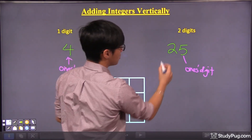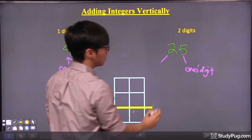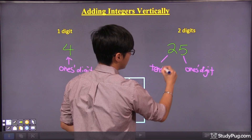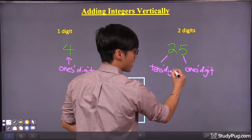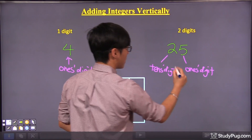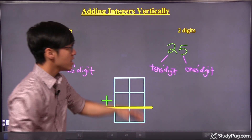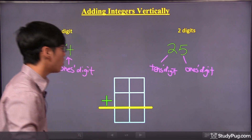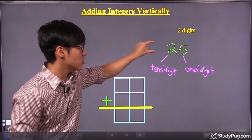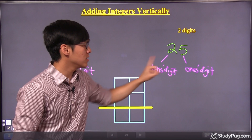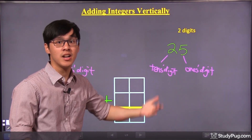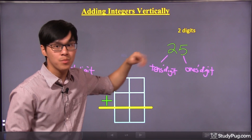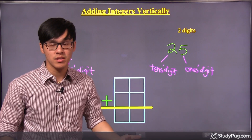And the digit next to it, to the left, will be the tens digit. And as you might have known already, if you have one more digit over here — let's say we have a one, making it one hundred twenty-five — that digit follows ones, tens, so what's after tens? It's hundreds. So if you have a one over here, that will be the hundreds digit.